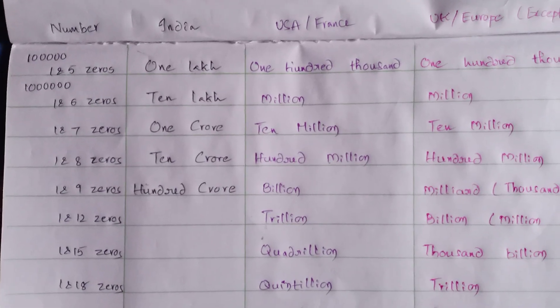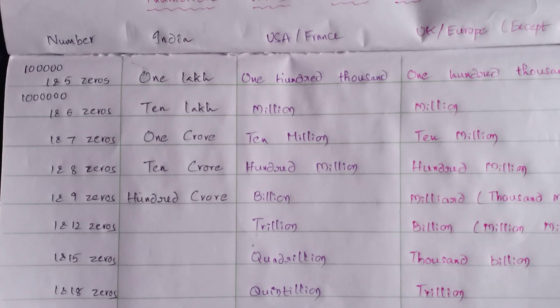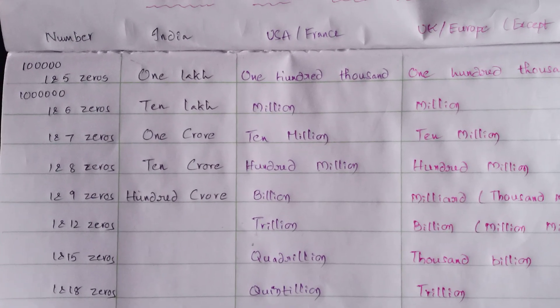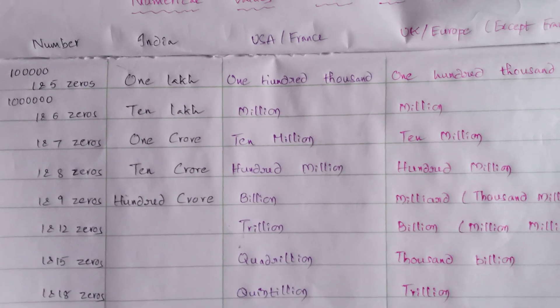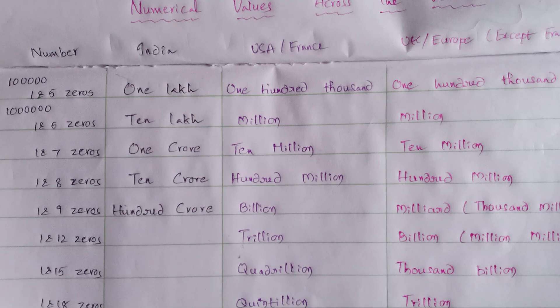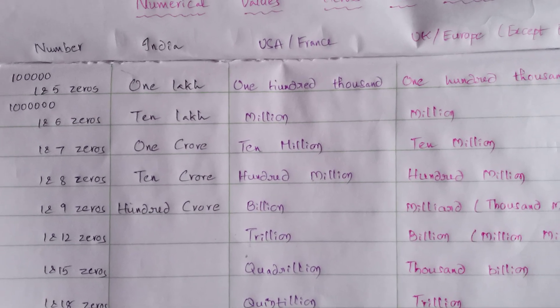1 followed by 6 zeros is known as — in India, 10 lakh. In USA, 1 million. In UK and Europe, 1 million.